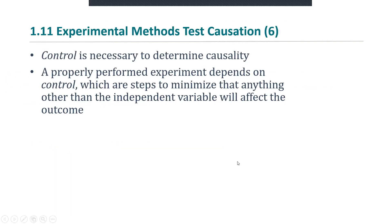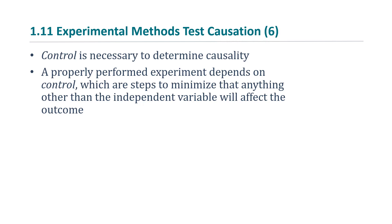Control is necessary to determine causality. A properly performed experiment depends on control, which are steps to minimize that anything other than the independent variable will affect the outcome. The basic logic of the experiment is that we only have one thing different between the two groups. That is so extremely important, because if there's anything else different between the two groups, that may be the cause of the results, and not the independent variable that you're testing.